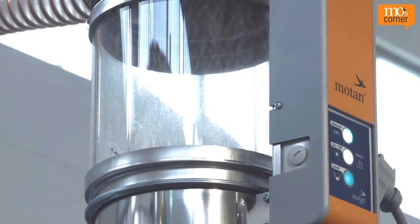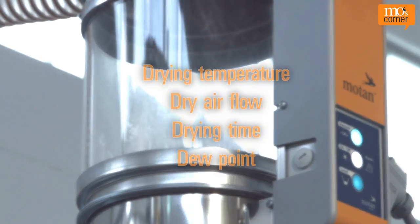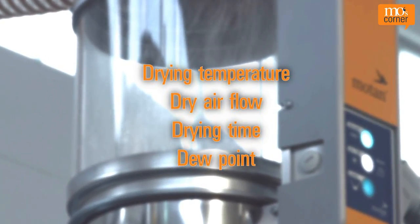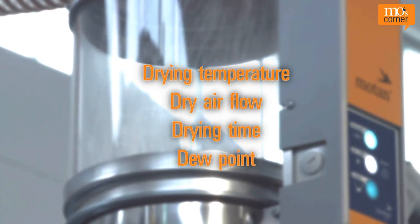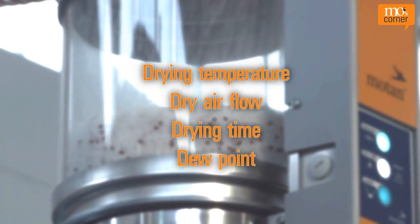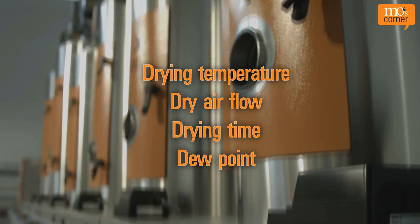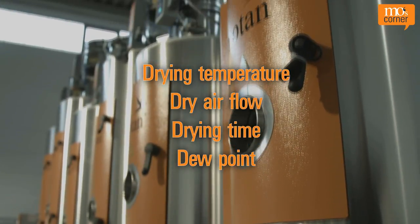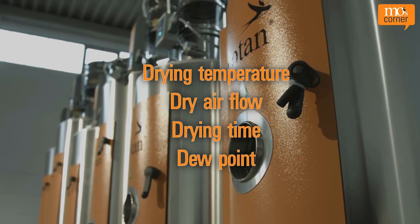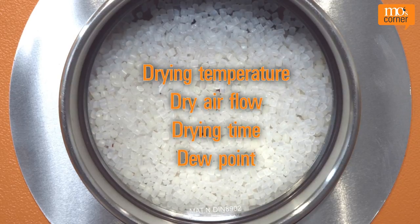It has become clear that the four factors — drying temperature, dry air flow, drying time, and dew point — must be balanced. Depending on the specific material properties, the adjustment of these factors can lead to an optimal result. Too much or incorrect drying not only costs money but can also damage the material.